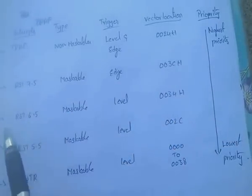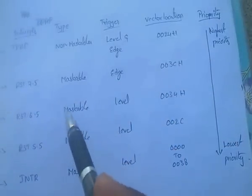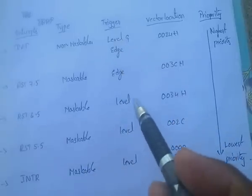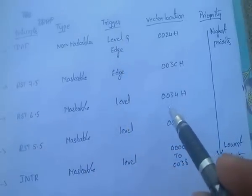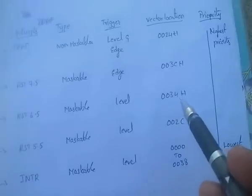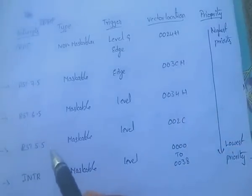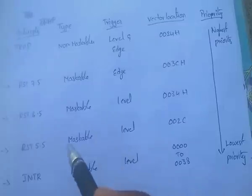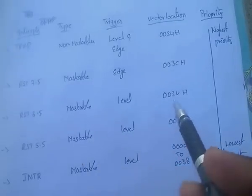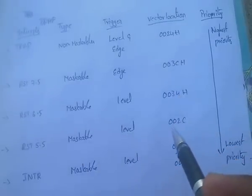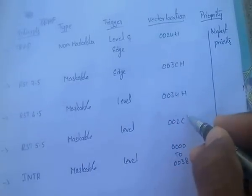RST 6.5 is also a maskable interrupt with level triggering and a vector location of 0034H. RST 5.5 is likewise maskable with level triggering and a vector location of 002CH.